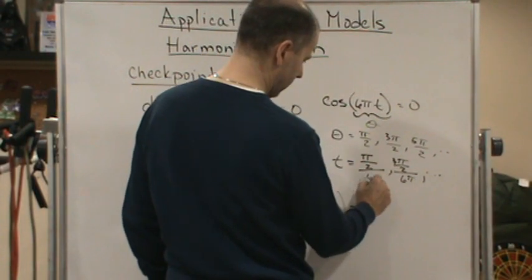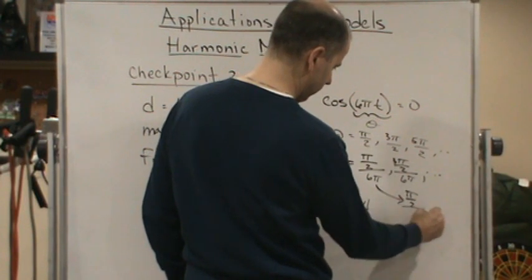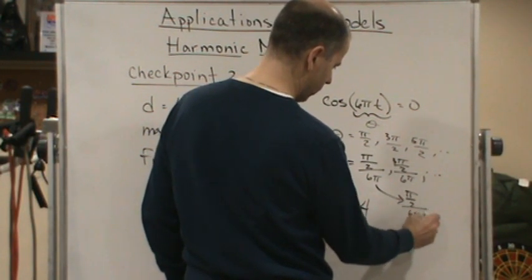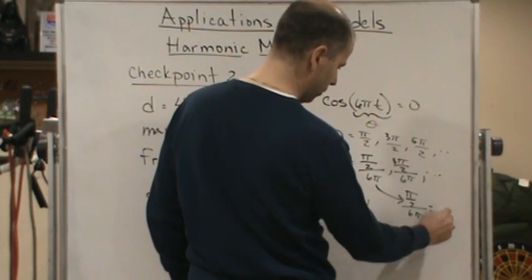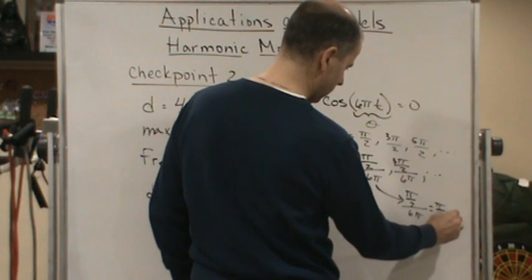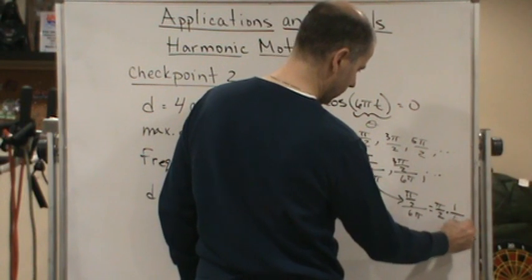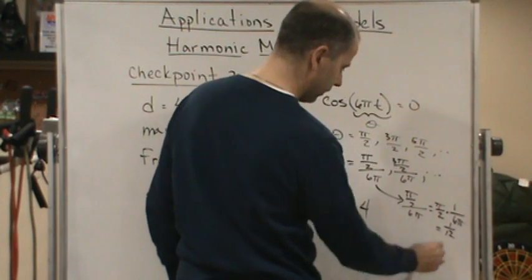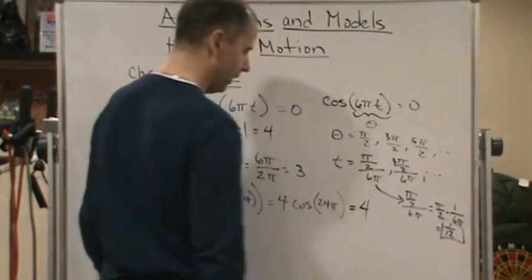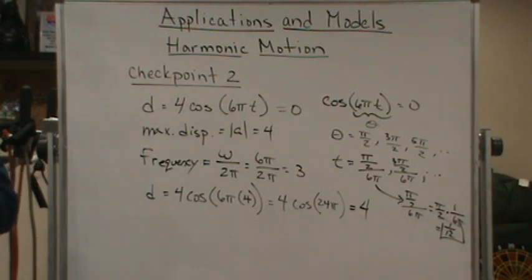So let's do this. So pi over 2 divided by 6 pi is equal to pi over 2 times 1 over 6 pi, which is equal to 1 over 12. So the answer is going to be 1 over 12. And there you go. Have a great day.